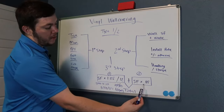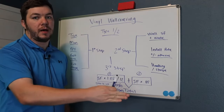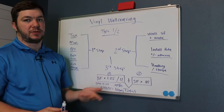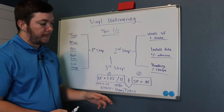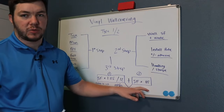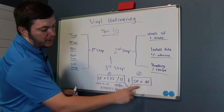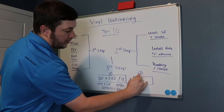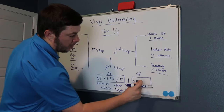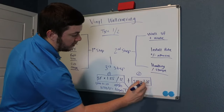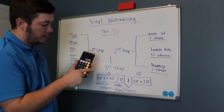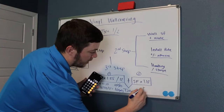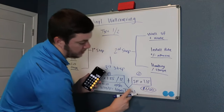Your installation cost is going to be based on your actual square footage — not the waste-adjusted number — because installation is exact. You know exactly how much square footage you need. You're still only putting it on a thousand square feet of walls, so you wouldn't add waste to your installation footage. So you take a thousand square feet times your marked-up install rate. If we paid installers 85 cents a square foot and marked it up to $1.15, that's a thousand times $1.15 — which equals $1,150 just for installation.